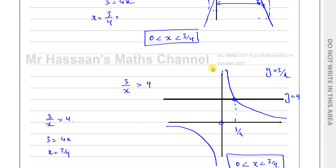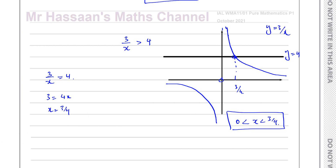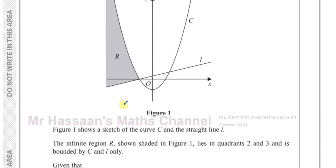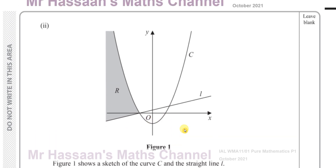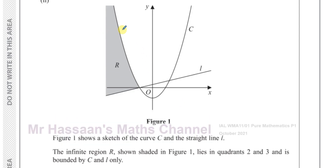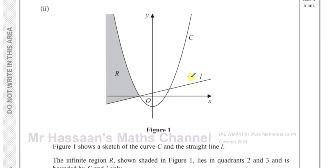That's an alternative graphical method giving the same answer. Now moving to part 2. Part 2 describes a sketch of a curve C and a straight line L. The infinite region R, shown shaded in figure 1, lies in quadrants 2 and 3 and is bounded by C and L only. The region is above the line and below the curve.